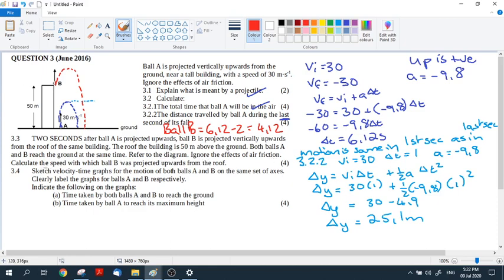So both balls A and B reach the ground at the same time, refer to the diagram, ignore the effects of air friction. Calculate the speed with which ball B was projected upwards from the roof. So we need to find for ball B, VI. Now, how far is ball B going to displace? Ball B is going to displace 50 meters in the negative direction because we said up is positive. Do you agree? So if up is positive, ball B is going to end up on the ground. So this is negative 50 is my delta Y. And because it's displacement, we just ignore everything that it did up top there. Displacement is just how far from start to finish.